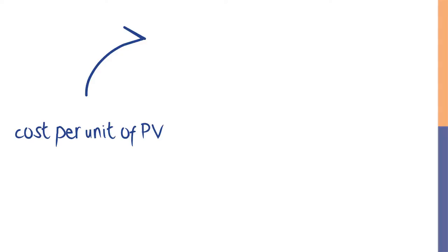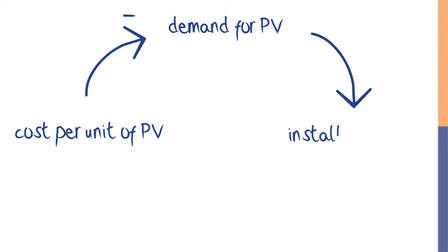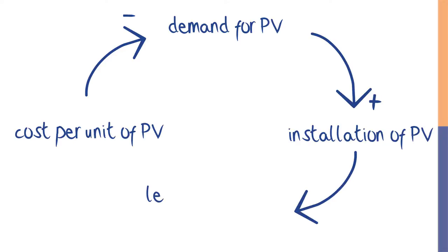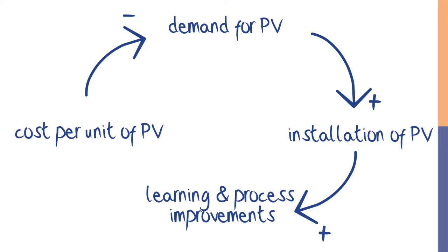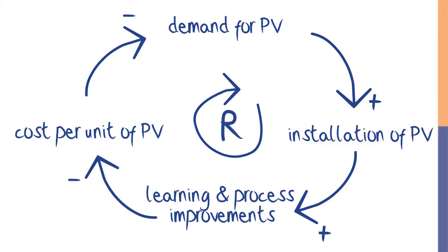Another type of reinforcing feedback can be spurred by investment. When a group of investors invest in a new, clean technology, they make it more practical and more affordable for others to make the same investment. Let's draw that process as a reinforcing feedback loop using the example of photovoltaic panels. If the cost of a unit of PV falls, demand for PV will go up, leading to more installation. As more units are installed, engineers, manufacturers, and installers have opportunities to improve their processes, making them faster and more efficient, causing the cost of a unit of PV to fall even further, leading to even more demand.